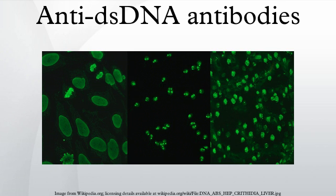HEp-2 cells, originally of laryngeal carcinoma origin, are actually a contamination of HeLa cells. They are routinely used in the diagnosis of ANA in diagnostic laboratories. HEp-2 cells provide a greater ability to differentiate patterns of ANA than animal sections, due to the large nuclei and high mitotic rate of the cell line. Upon incubation with serum containing anti-dsDNA antibodies and fluorescent-labelled secondary antibodies, homogeneous staining of interphase nuclei and condensed chromosomal staining of mitotic cells can be seen.